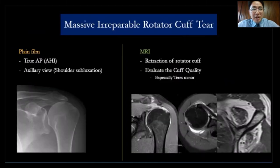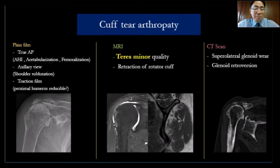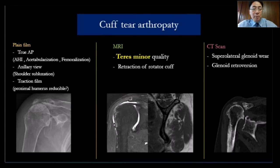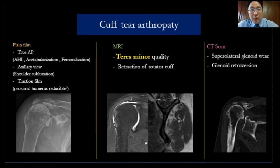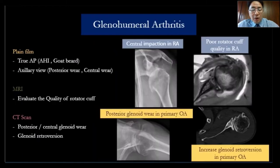For massive irreparable cuff tear, I need X-ray — AP, axillary view, and MRI. You need to look at the teres minor, because it's a very important muscle for abduction and external rotation. For cuff tear arthropathy, if there's no glenoid problem, I use X-ray and MRI. When the patient has a glenoid problem, I also use CT scan.